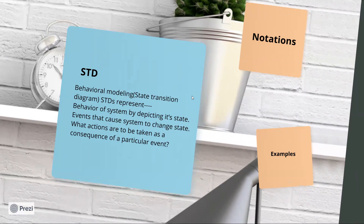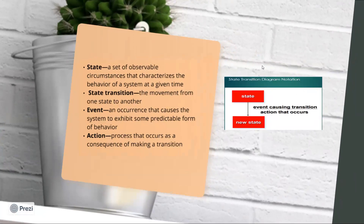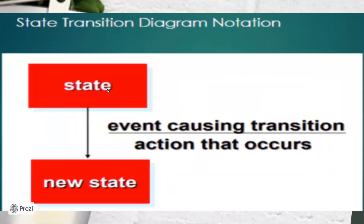We define which event has changed the state of a particular system and what action you can take as a consequence of a particular event. The notations are: we have a state, then a state transition where we go to a new state, an event that will occur to move to the next state, and an action that occurs when transitioning from one state to another.